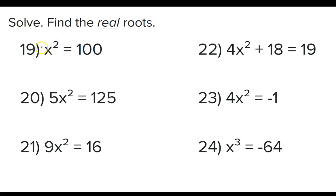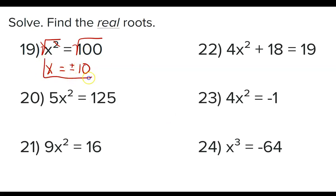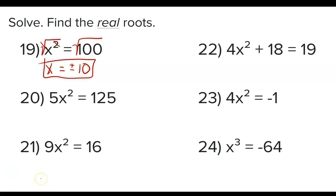Starting with problem 19: to get rid of the squared, I'm going to square root both sides — that cancels and we're left with x equals the square root of 100. That's an even root, so I need the plus or minus symbol. The square root of 100 is 10, so x = ±10.